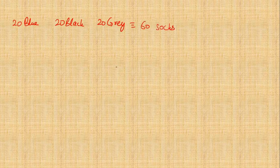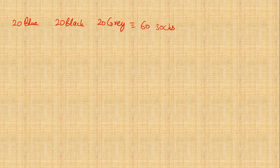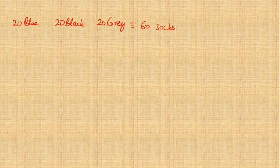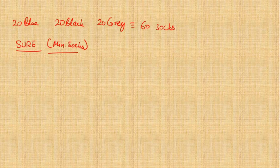All 60 socks are put randomly inside the drawer in an unorganized way. There was a blackout, so we cannot see anything — we can only blindly take out one sock at a time. The question is: after drawing out a minimum of how many socks will you be sure that you have found a pair — meaning two socks of the same color, whether blue, black, or gray?